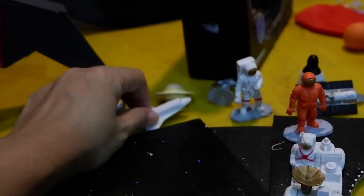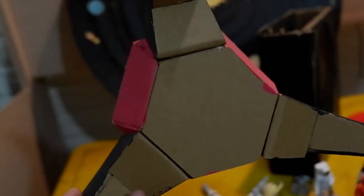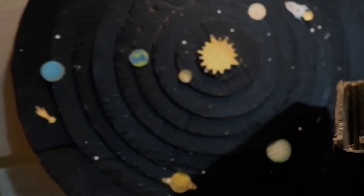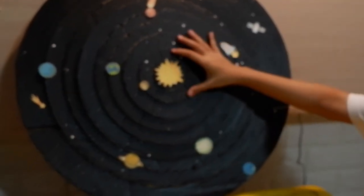Naik pesawat luar angkasa. Nah ini Apollo, roket ini, ini juga dari kardus. Nah ini yang tadi, yang dibilang bumi berputar mengelilingi matahari. Ini contohnya nih, coba ya. Ini matahari.